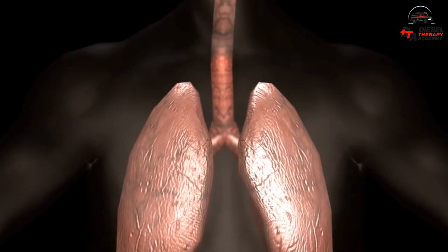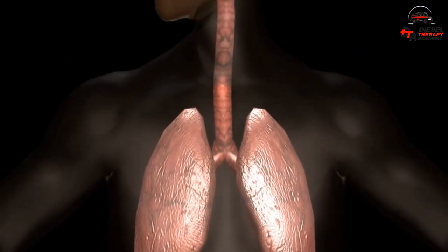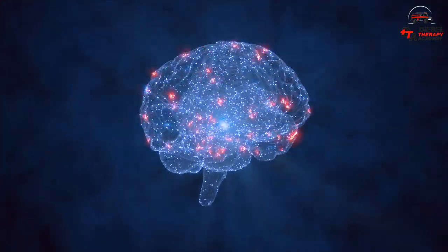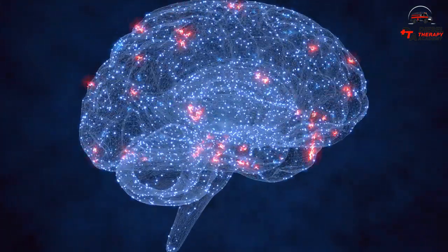The respiratory control system drives respiratory cycles and consists of three components: the central neural respiratory generator, the sensory input system, and the muscular effector system.